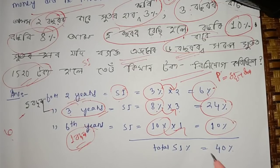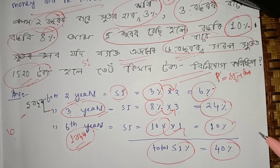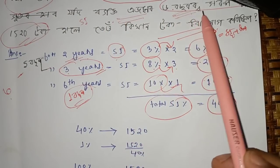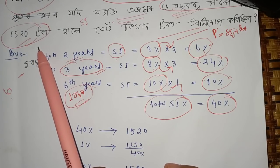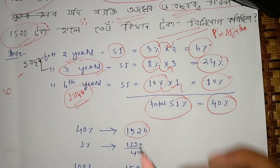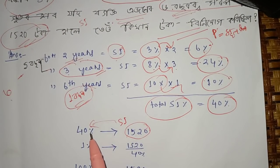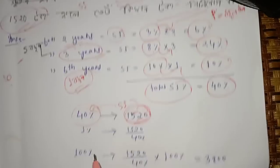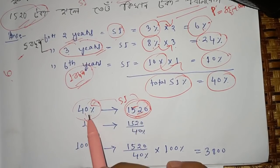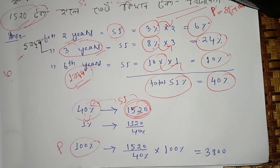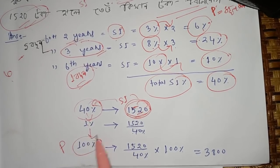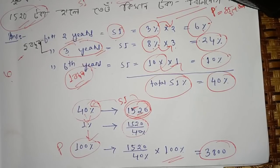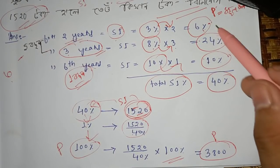So the total percentage is 6% plus 24% plus 5%, which is approximately 40% total simple interest over 6 years. We have the simple interest equal to 1,520, and the total is equal to 40%. So 40% equals 1,520. Dividing 1,520 by 40 and multiplying by 100 gives us 3,800. So the answer is 3,800 — the principal investment.